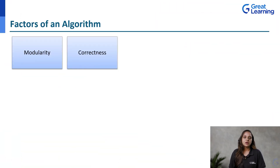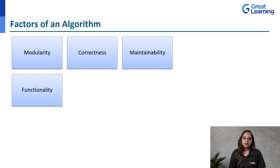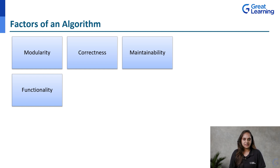Next is correctness. An algorithm should be designed in such a way that it produces the expected or correct output for all possible inputs. Next is maintainability — an algorithm should be designed so that it is easy to maintain. Next is functionality, which is related to the efficiency of an algorithm. If an algorithm is efficient enough, it should give us the highest optimization while using less memory space.